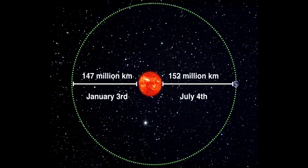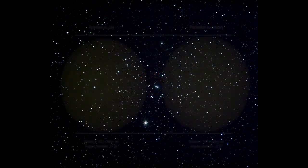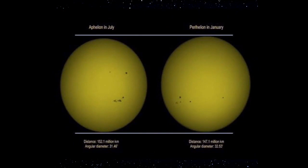We refer to those two different times as aphelion — when we're further away — and perihelion — when we're closer. What time of the year do you think perihelion occurs, and what time of the year do you think aphelion occurs? Think about that and answer this question.